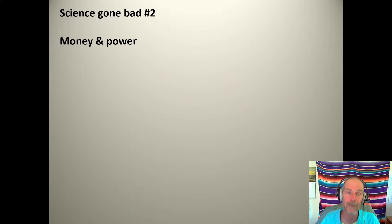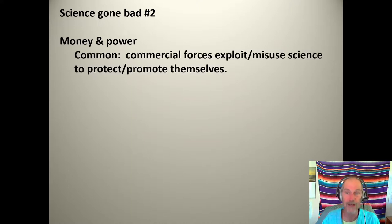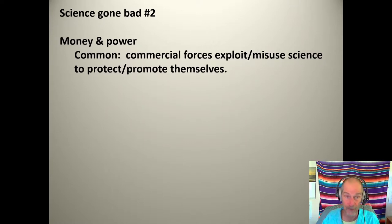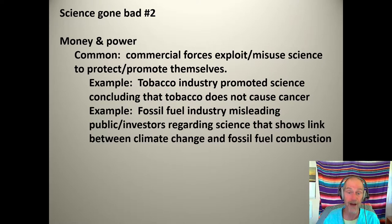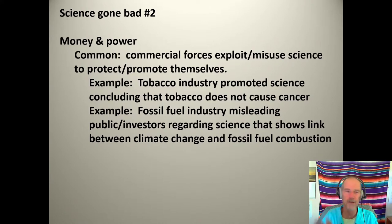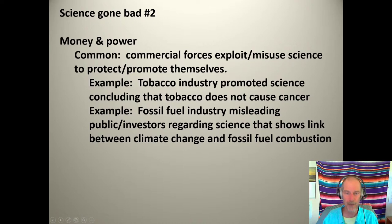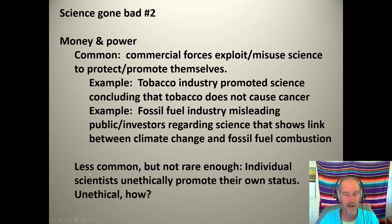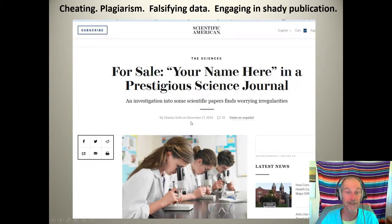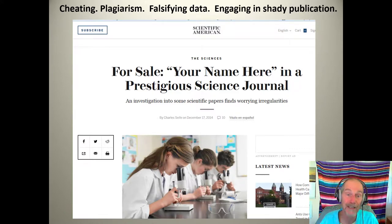Science gone bad, number two: money and power. Commercial forces commonly exploit or misuse science to protect themselves — the tobacco industry and the fossil fuel industry are great examples. Big money co-opts scientists, produces bad science published as good science, muddies the waters, slows down reform, and protects the bottom line. Individual scientists also unethically promote their own status by fabricating data or paying to have publications published without peer review, which inflates their publication record.